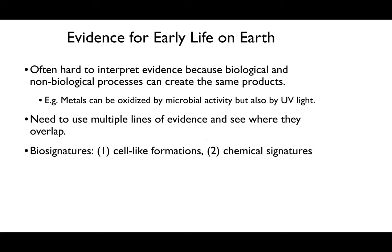It can often be hard to interpret the evidence of life on Earth because biology and non-biology can actually create similar products. For example, some metals can be oxidized by microbial activity, but also by ultraviolet light. So when trying to infer evidence of life, we want to use multiple lines of evidence and see where they overlap. We use what are called biosignatures—pieces of evidence in the Earth that tell us life is present, including cell-like formations and chemical signatures.